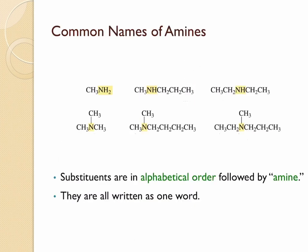The common name of an amine consists of the names of the alkyl groups bonded to the nitrogen listed in alphabetical order. Here we have only one alkyl group — a methyl group — so it is simply called methylamine. In the next compound, we have two groups: a propyl group and a methyl group. These should be listed in alphabetical order, so this is methyl propyl amine.